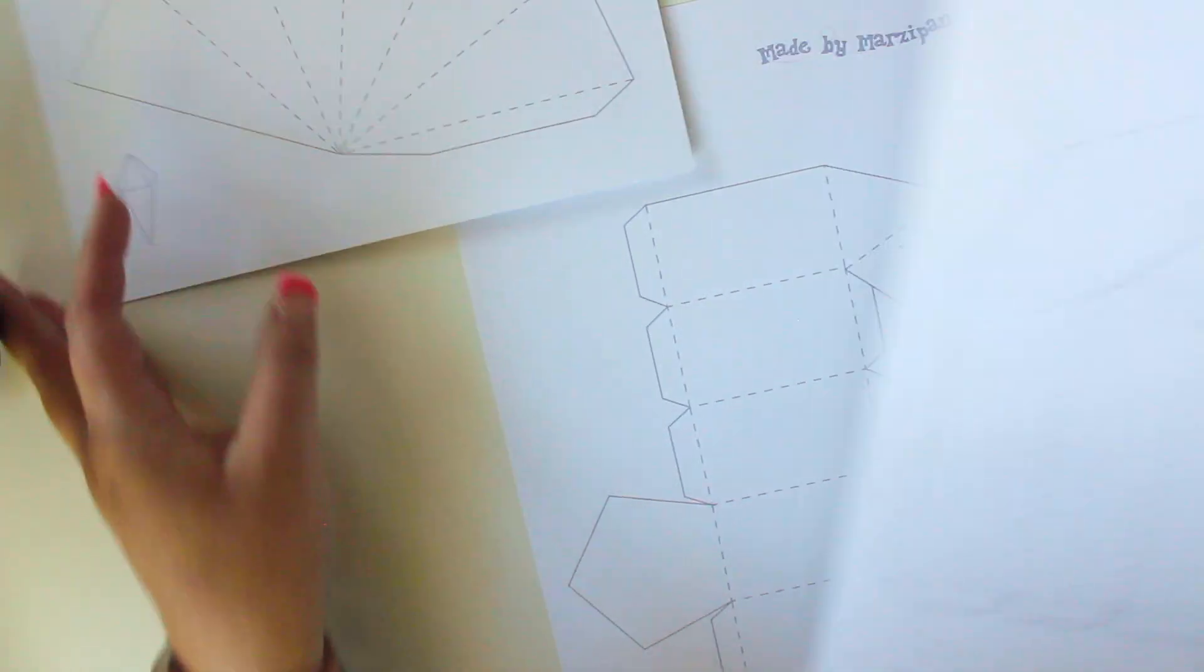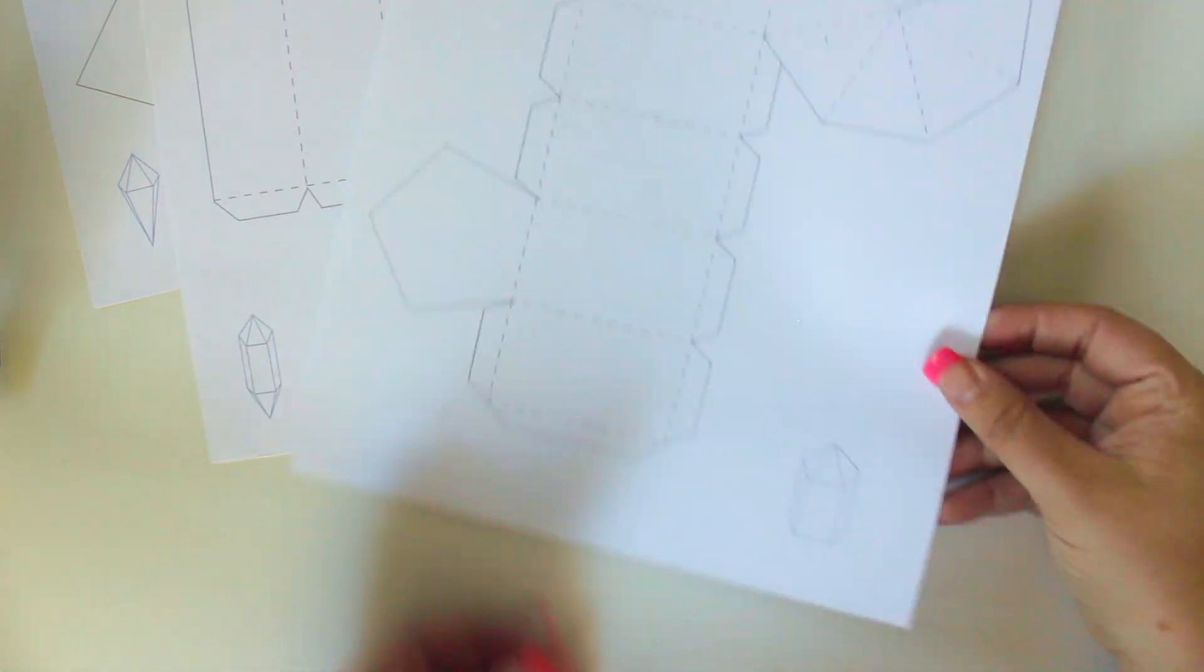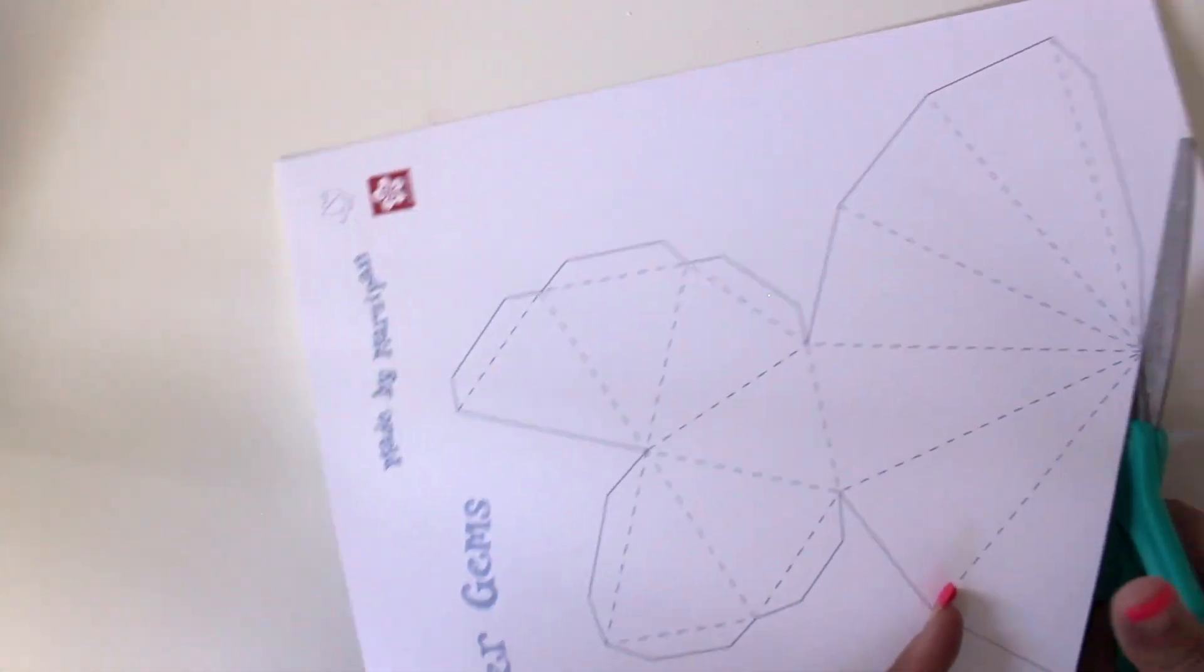Begin by printing the free three-page template by clicking on the link in the video description. I recommend printing these on cardstock so they're more durable. Cut out the shapes along the solid lines.